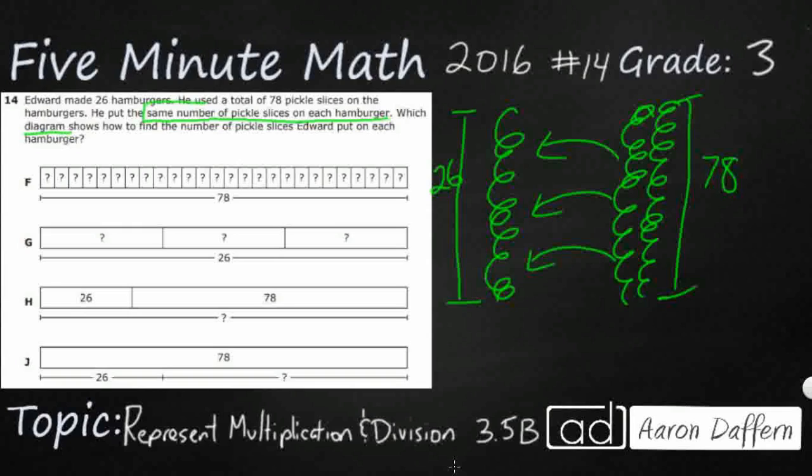So when we're looking at same number, when we are looking at sometimes they might use the term equal groups or maybe they'll just say same amount, all of these are going to be your big clue that we are looking at multiplication and division. Whenever we get into same number, equal groups, same amount, that is your clue that we are looking at multiplication and division.